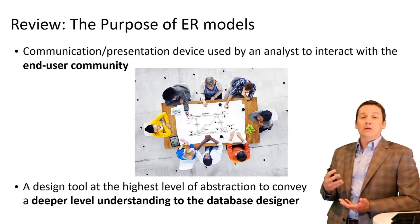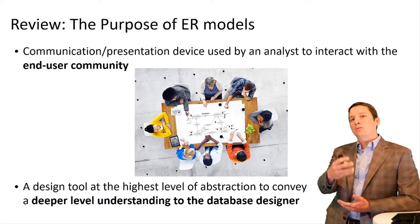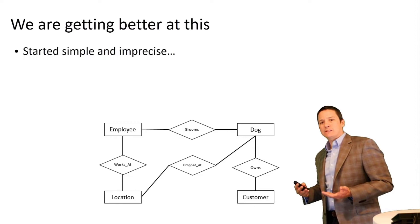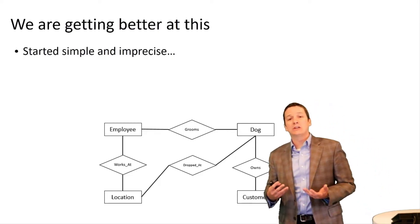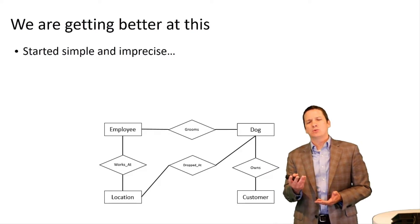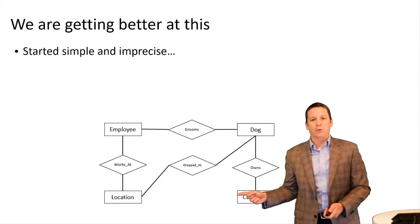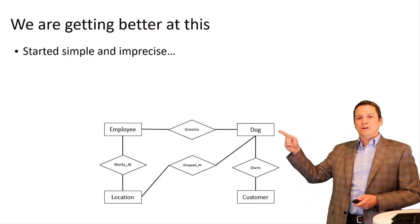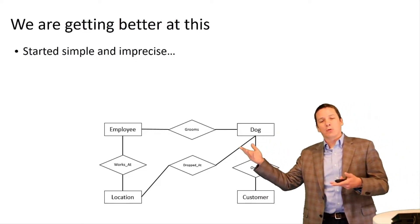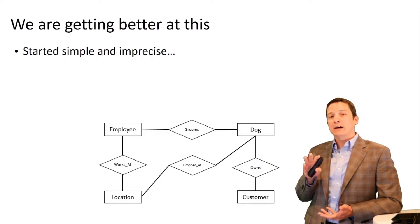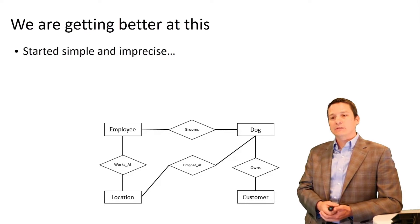The ER model works in both directions — to explain things to our less technical users, but also to give direction to our more technical users. We started with a pretty simple and imprecise presentation layer model describing a short vignette called Dave's Dog Wash, where we have customers that own dogs, dogs are groomed by employees, employees work at locations, and dogs can be dropped off at locations. This was our very first attempt at capturing business requirements in a simple ER diagram.